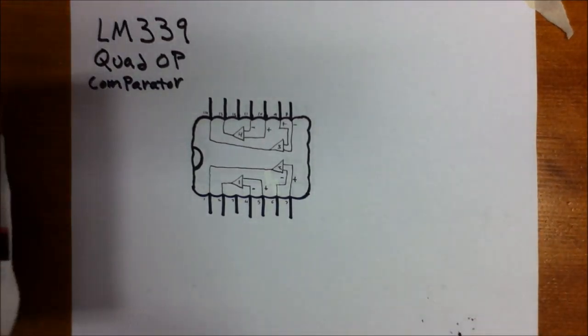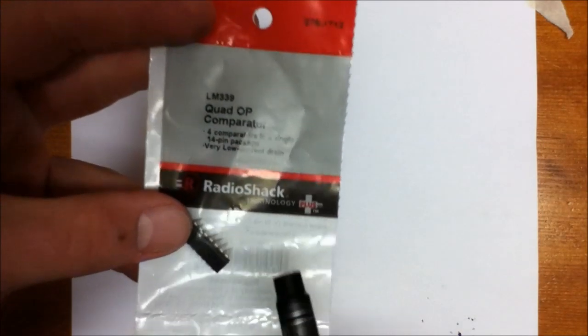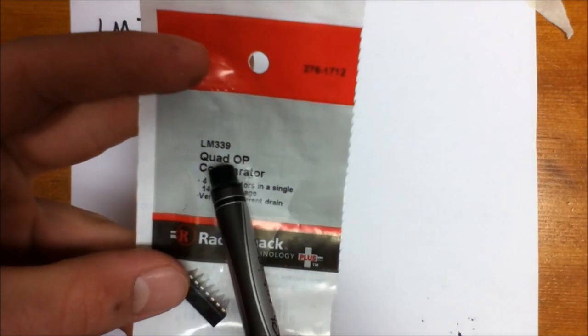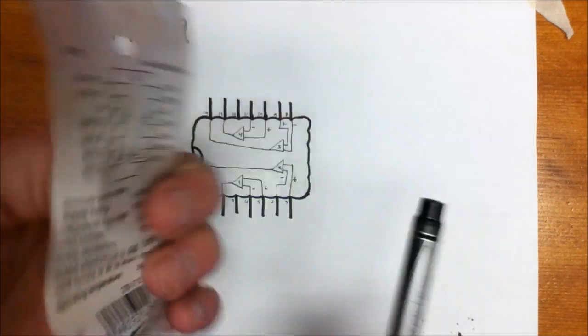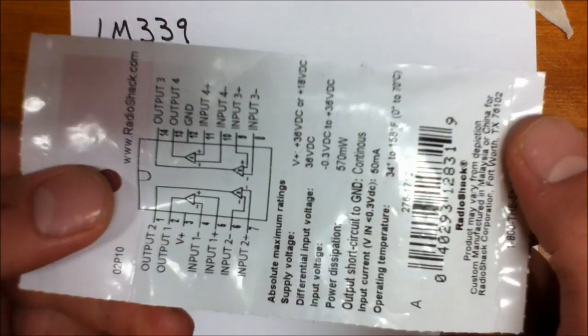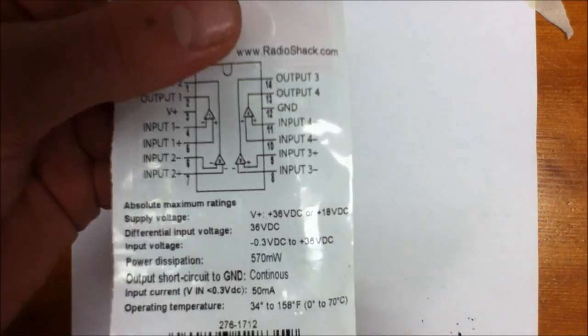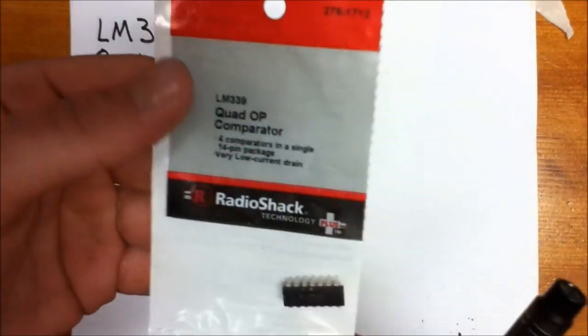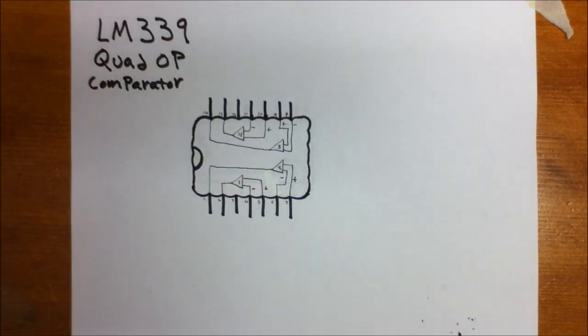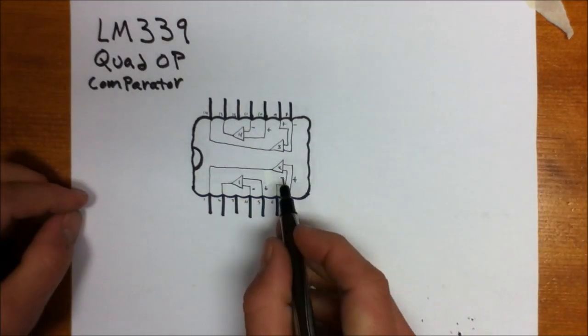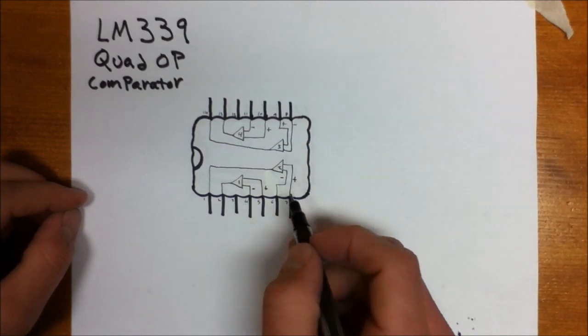The circuit I decided to build uses the LM339 Quad Op Amp Comparator. This is a very basic chip that you can get most anywhere. I happen to get this at Radio Shack. So inside the chip, you have the four comparators.